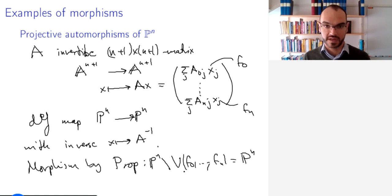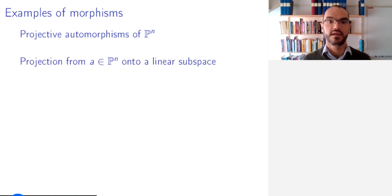In fact, an isomorphism of ℙⁿ with itself, an automorphism, and one can show that any automorphism of ℙⁿ is of this form. But we will not delve into that. We will look at a different example.